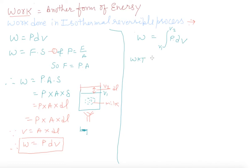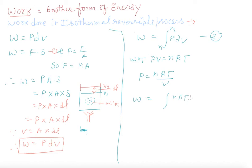From the ideal gas equation, PV = nRT, so P = nRT/V. Substituting this value of P into the integral, W = integral from V1 to V2 of (nRT/V) dV. The constant term nRT comes outside the integral, giving W = nRT × integral from V1 to V2 of dV/V.